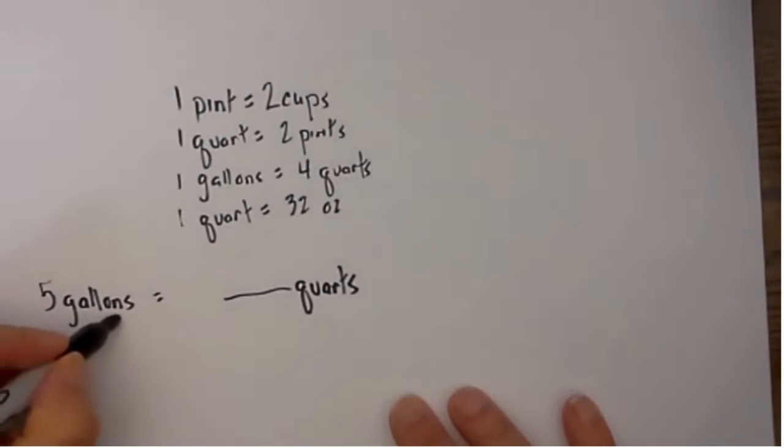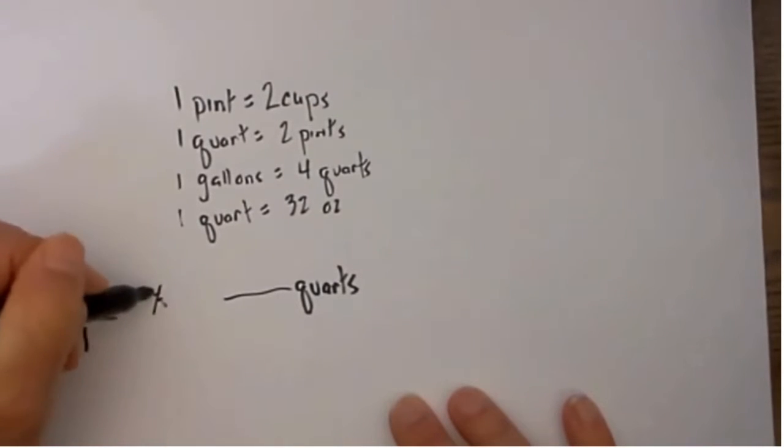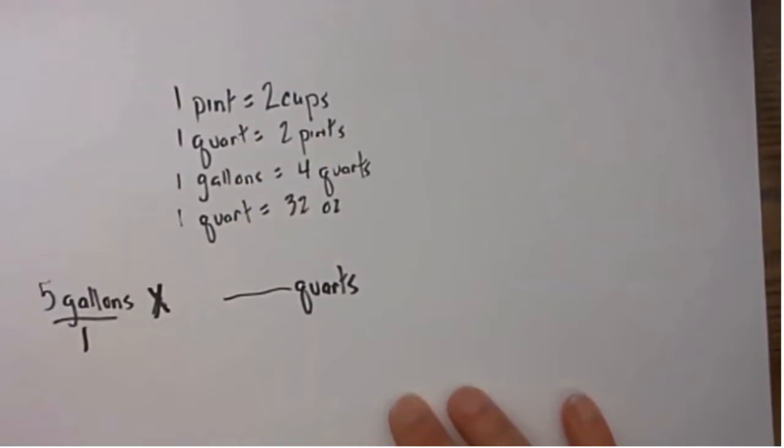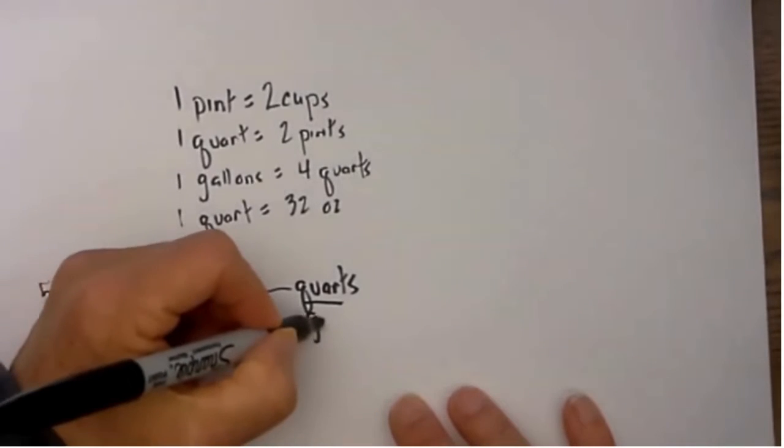To begin with, I always place the unit of measure that is given over 1. I then have a multiplication sign and then what I do is I put the unit of measure I would like to convert to on top of this fraction and what is given on the bottom.